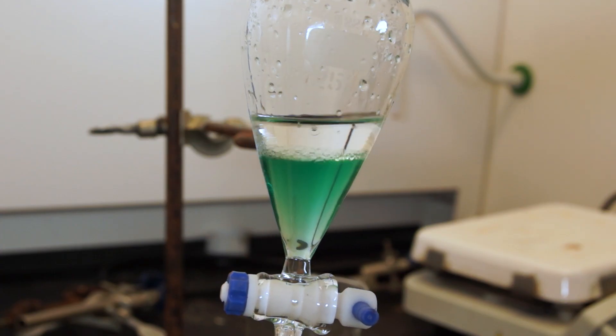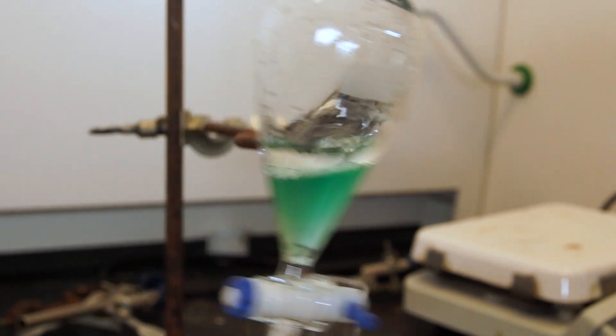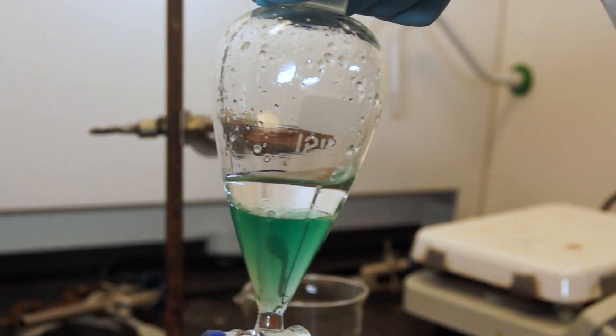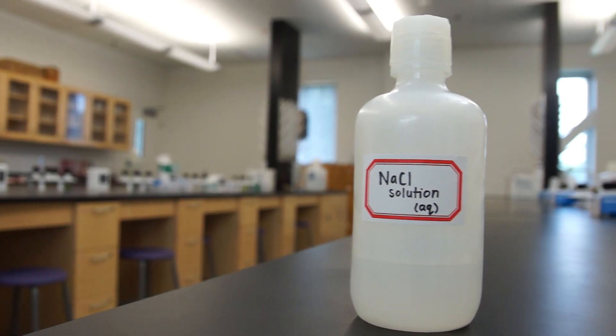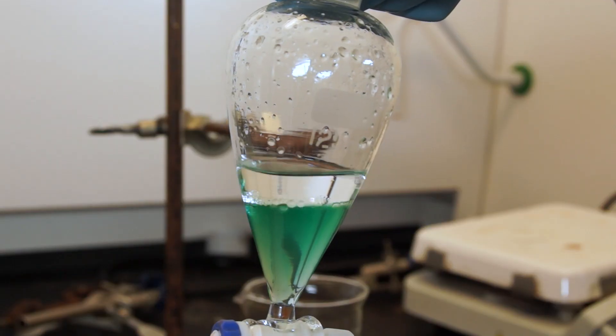If you have an emulsion in your separatory funnel, try clearing it up by making quick, fast swirls. You could also try adding some sodium chloride solution. Make sure the emulsion is cleared up before you try separating your layers.